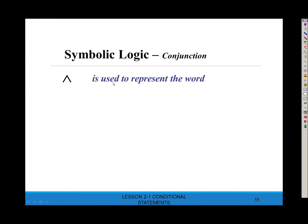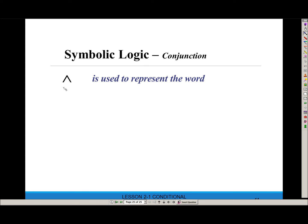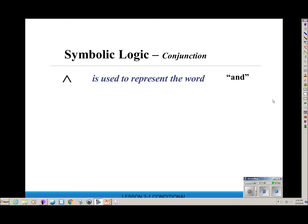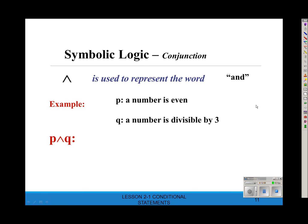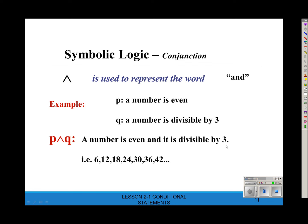A conjunction is two statements grouped together with the word 'and,' and the upside-down V (∧) is the symbol for 'and.' The way to remember it: the word 'and' starts with capital A, and that upside-down V almost looks like a capital A. So if statement P is 'a number is even' and statement Q is 'a number is divisible by 3,' then P ∧ Q says: a number is even and it is divisible by 3.